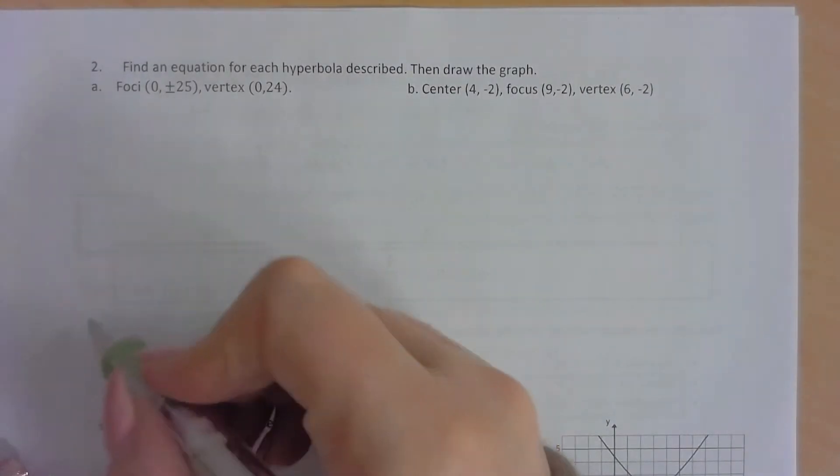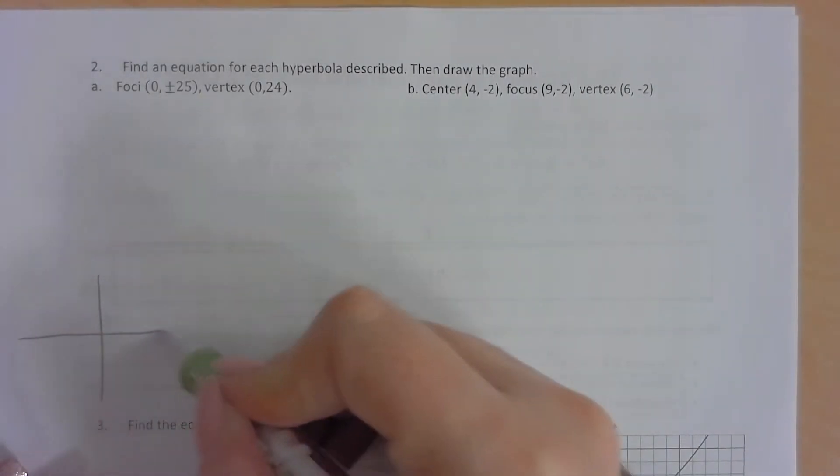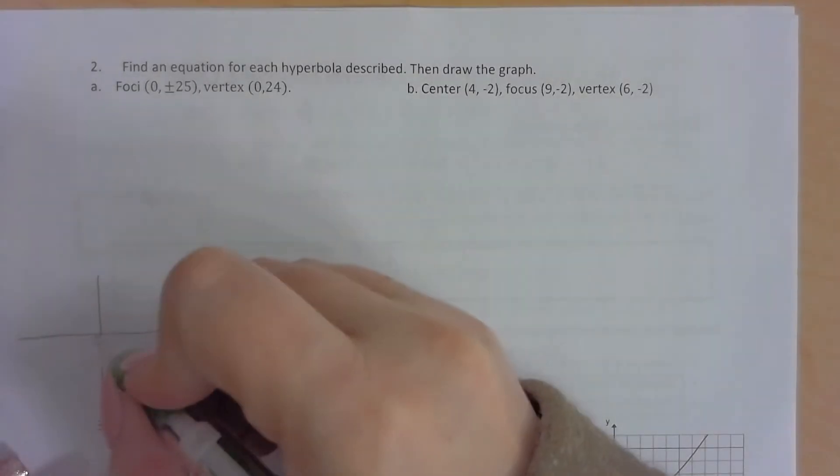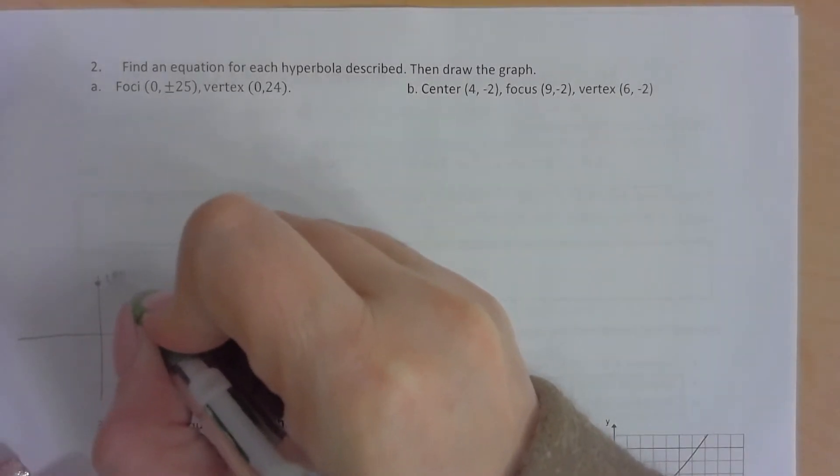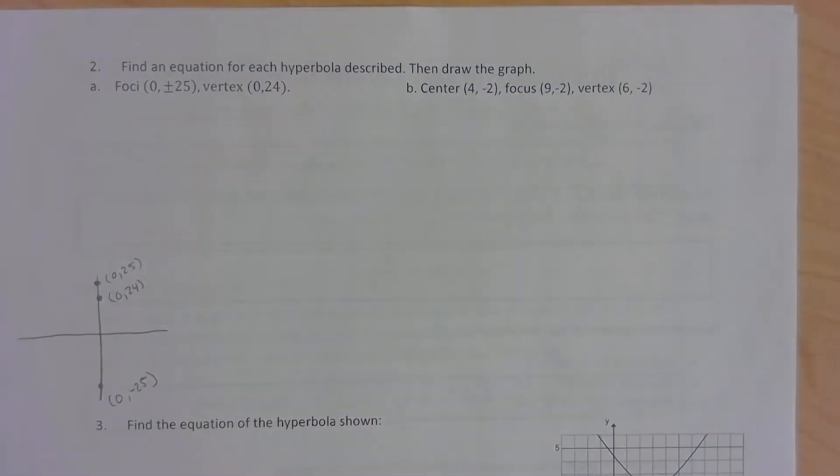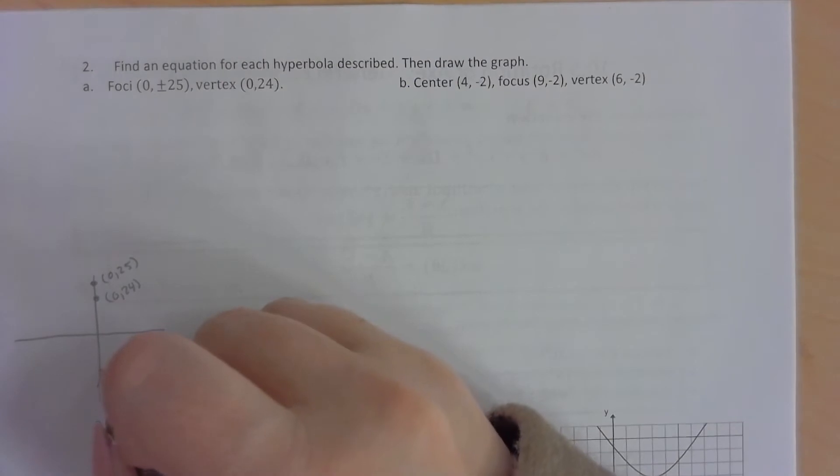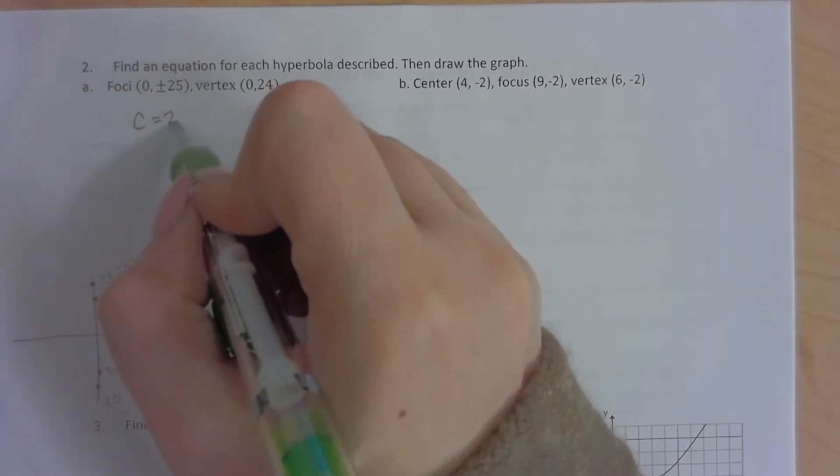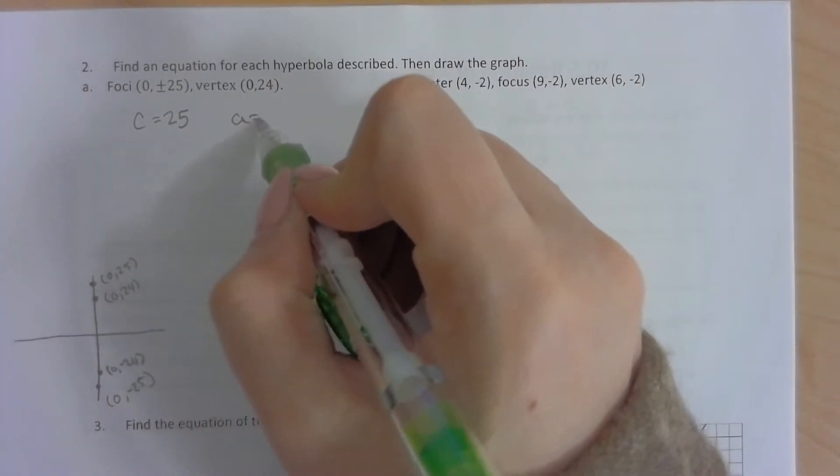So if we were to have our picture here, the foci are at 0, 25 and 0, negative 25, and then we have a vertex at 0, 24. So that would mean the other vertex would be at 0, negative 24. So what does that tell us? That tells us that c is 25 and that a is 24.